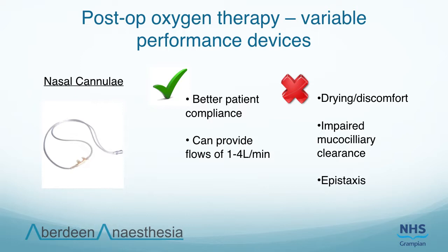Nasal cannulae are a suitable alternative in those requiring low level supplemental oxygen. Prongs are inserted into the patient's nose and tubing is looped up around the ears. Gas flows of 1-4 litres per minute are typically used, as higher flows can cause complications such as drying and discomfort, impaired mucociliary clearance and epistaxis. The nasal pharynx acts as an oxygen reservoir, and therefore even if the patient breathes through their mouth, oxygen will be entrained from the nasal pharynx.